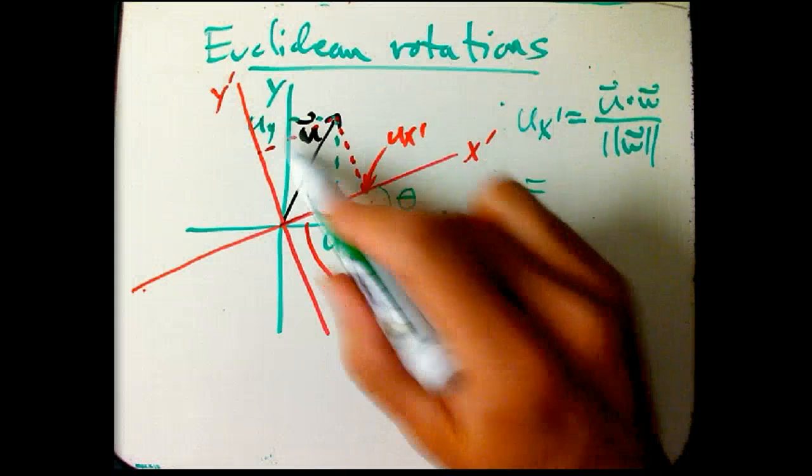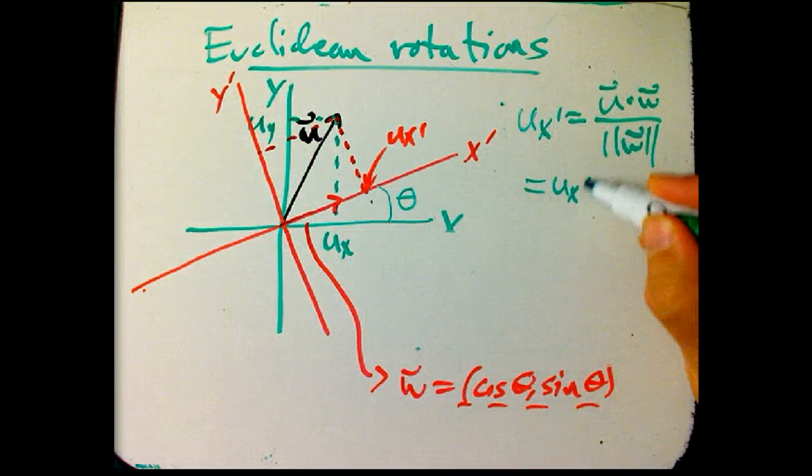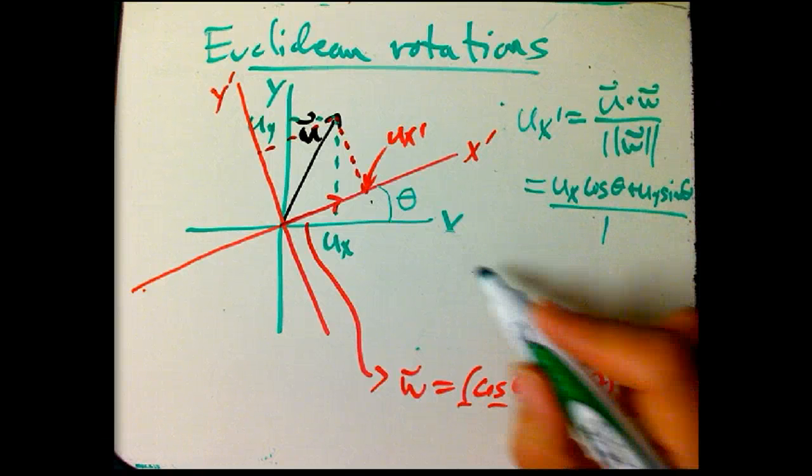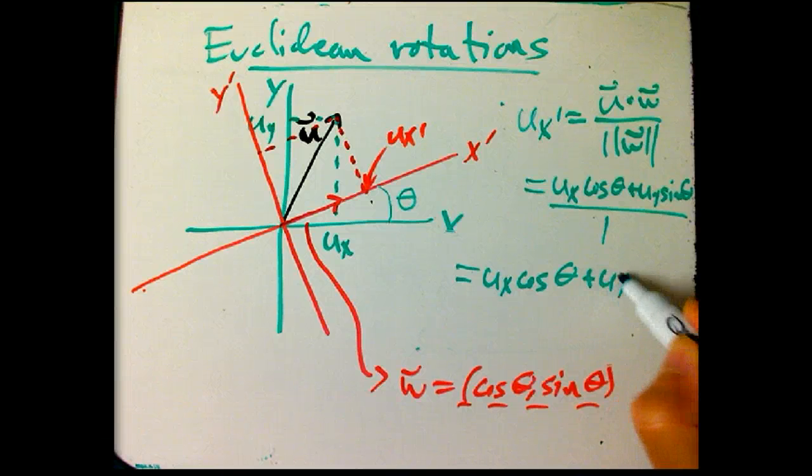U dot W, this U was UX and UY, and then times this one. So, you get UX cosine theta plus UY sine theta, all over one, because this happened to be a unit vector. So, we get UX cosine theta plus UY sine theta.